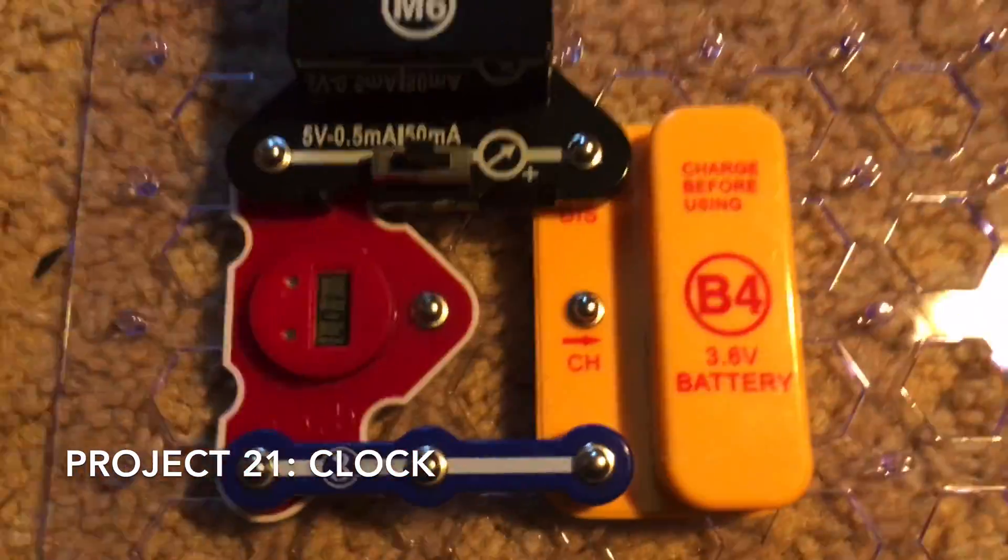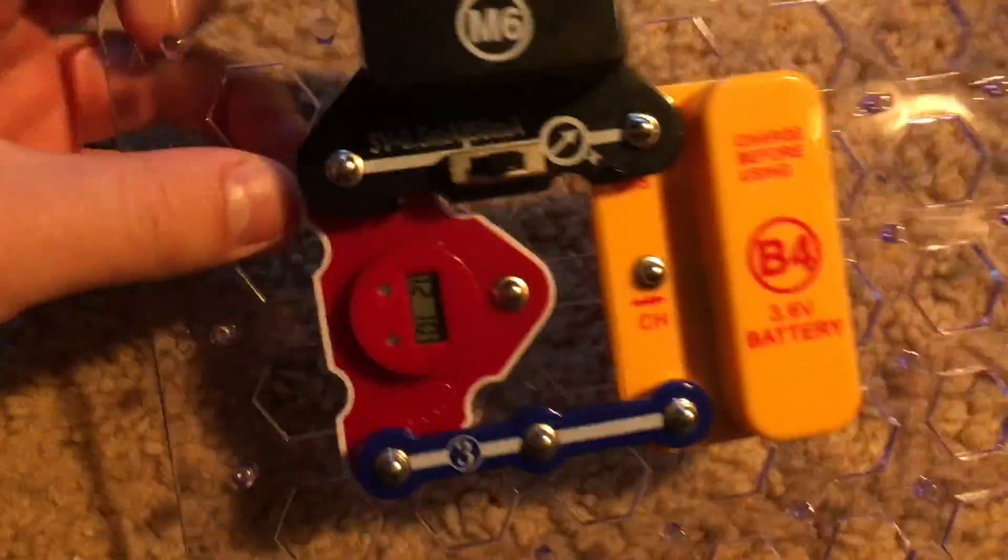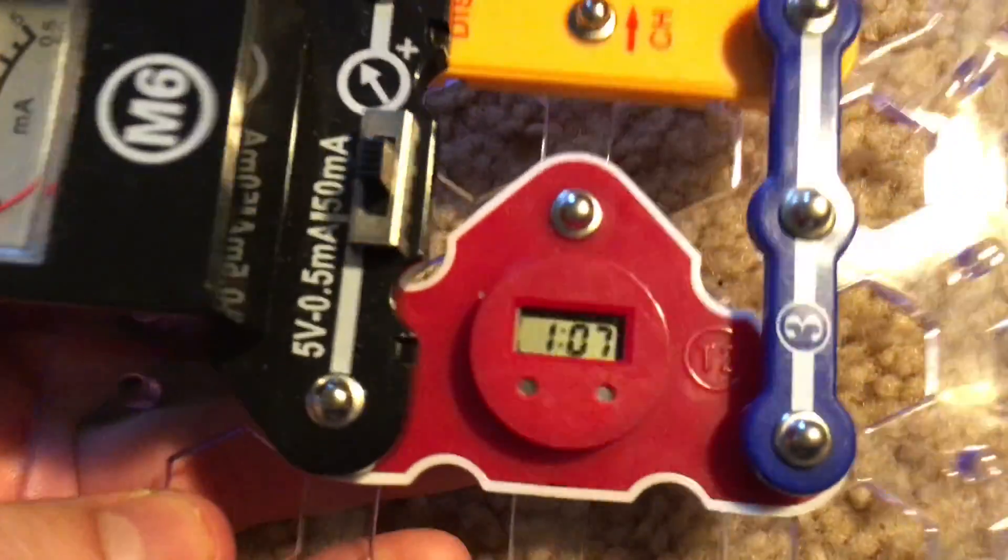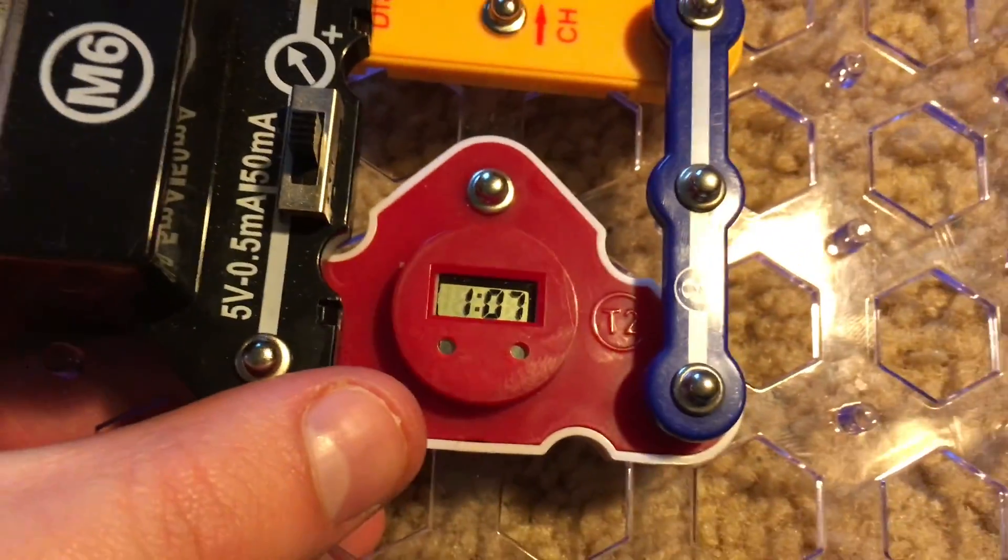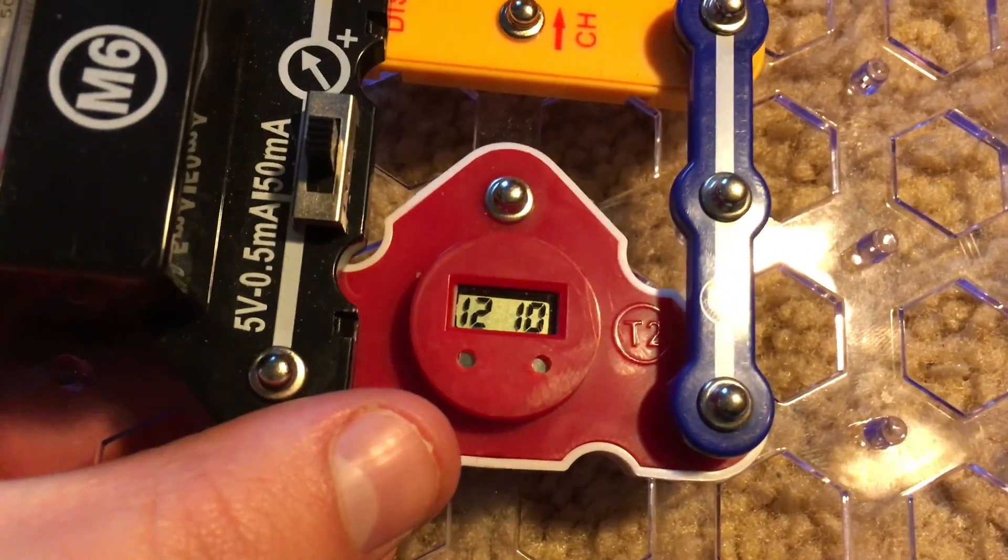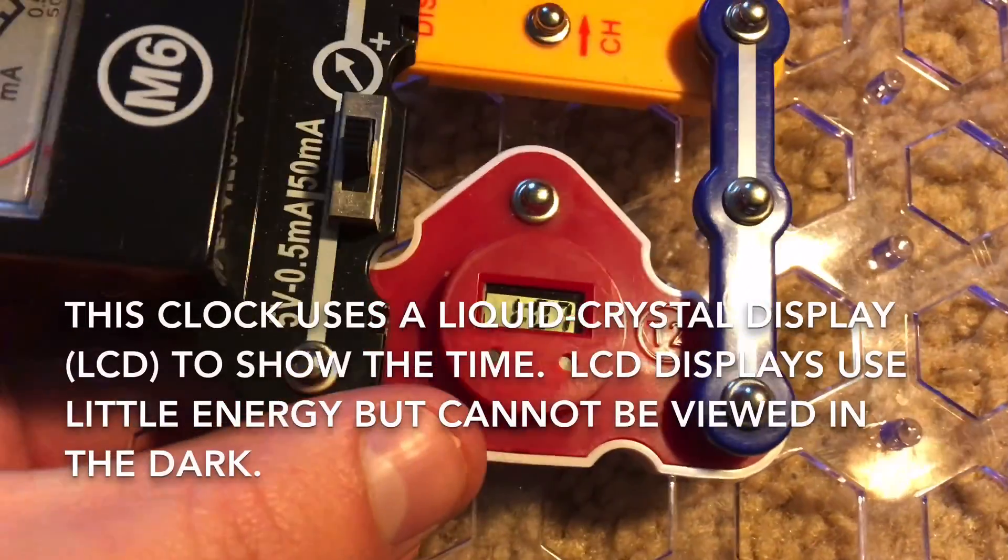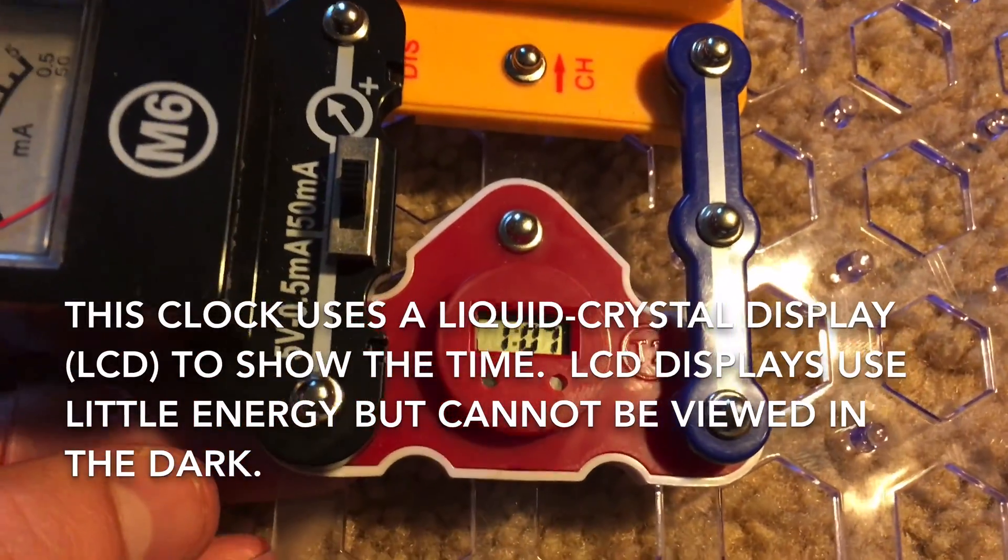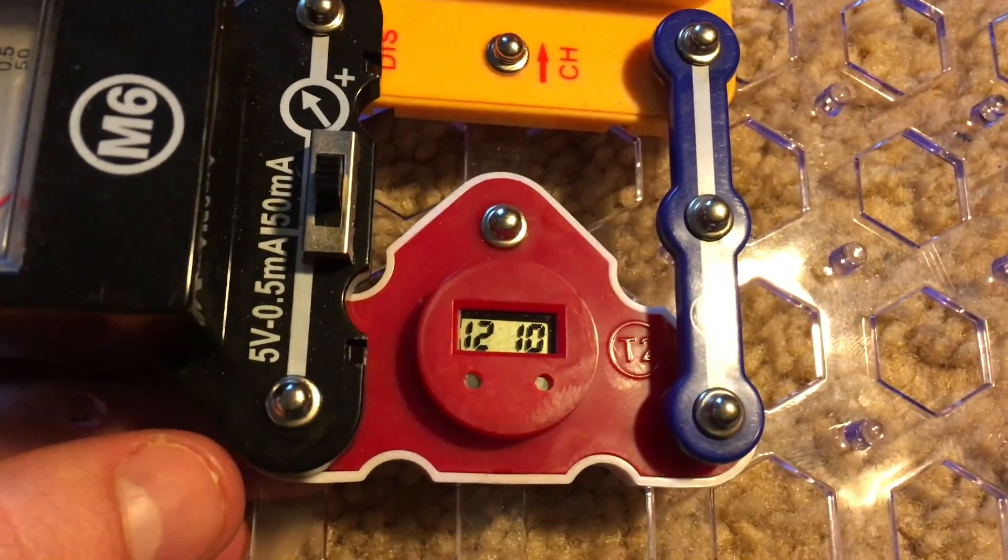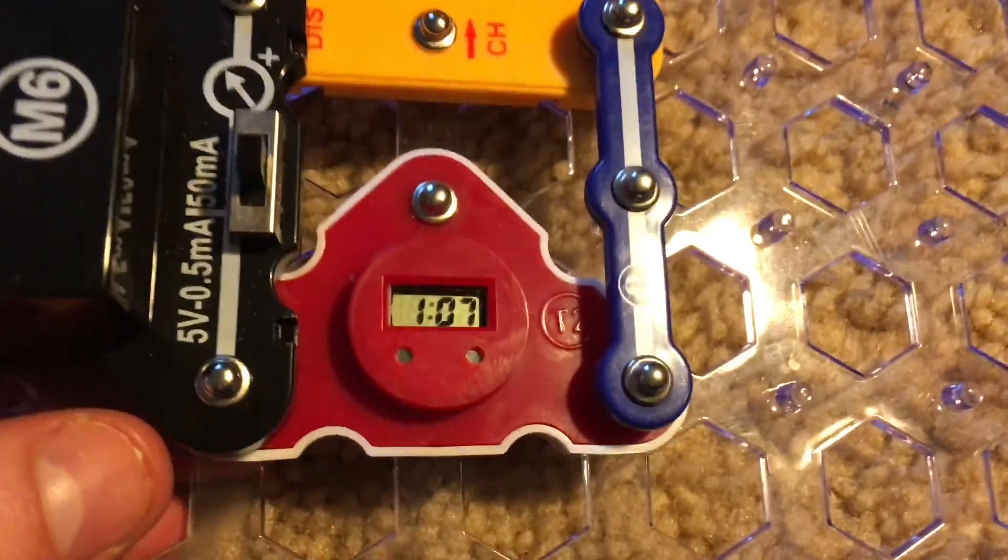This circuit will teach us a little bit about the clock included in this kit. The clock is the triangular red component and it uses a liquid crystal display or LCD display. Liquid crystal displays use very little energy but they cannot be viewed in the dark.